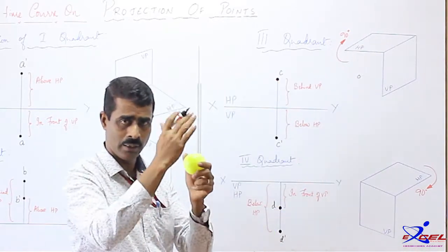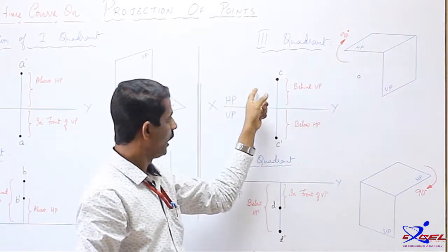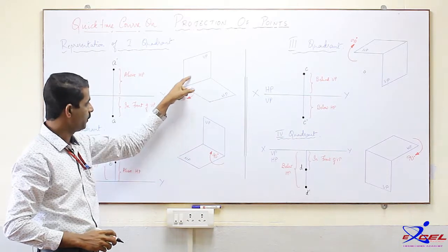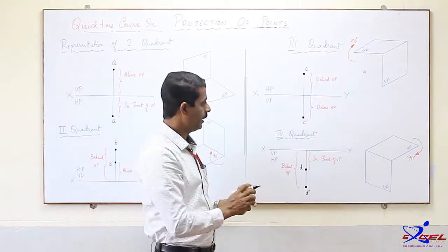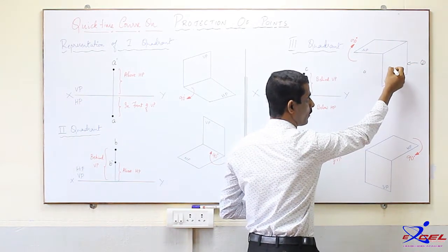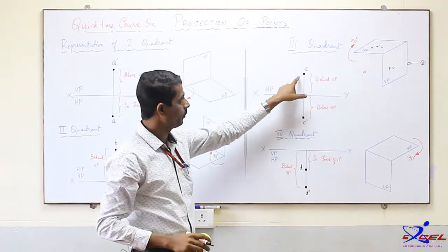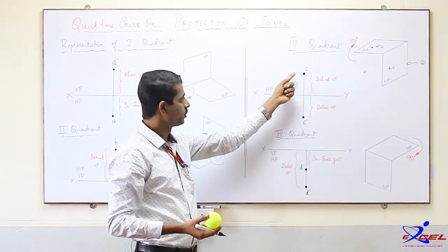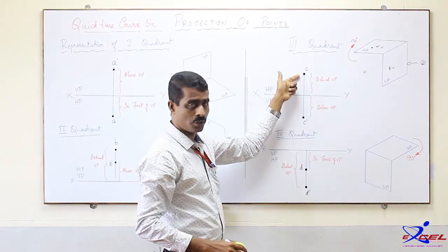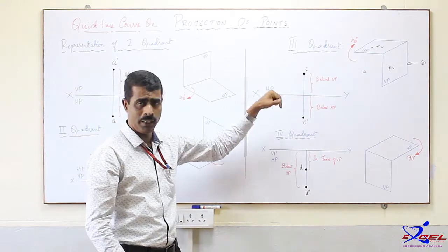To get HP and VP in the same plane, we rotate the horizontal plane 90 degrees clockwise. When rotated clockwise, HP goes above the XY line and VP comes below the XY line — exactly opposite to the first quadrant. The front view falls on the vertical plane and the top view falls on the horizontal plane; this does not change. Top view will always be in the horizontal plane; the front view will always be in the vertical plane — only the position changes.